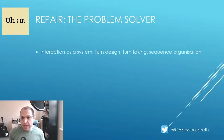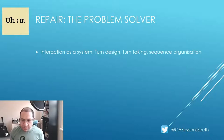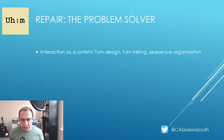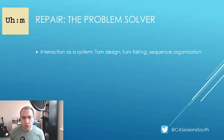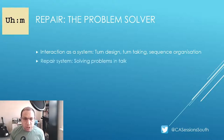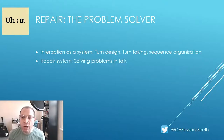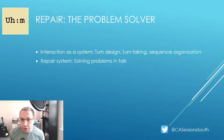One way of thinking about CA is that it's a systems-level approach to the study of social interaction. It includes systems such as turn design, turn taking, sequence organization, and so on. In this respect, repair relates to when these systems go wrong, and it can be considered as the problem solver or conversational troubleshooter.